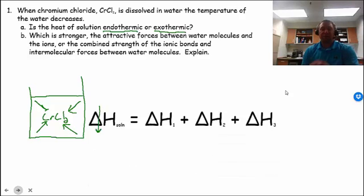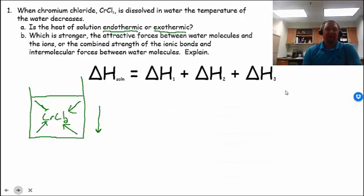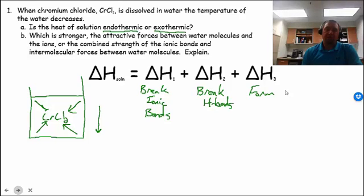So if you remember, there's three steps in the dissolving process. We have to break the ionic bonds, we have to break the hydrogen bonds, we'll call them H bonds, and then we form new bonds.